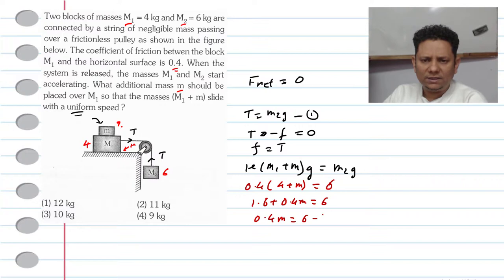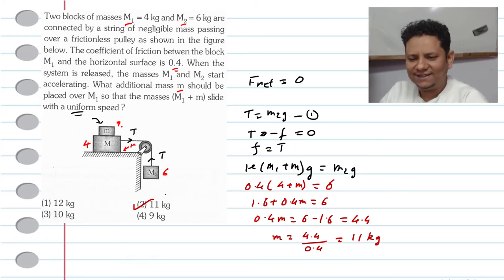This gives 0.4m = 6 - 1.6 = 4.4, so m = 4.4 ÷ 0.4 = 11 kg. Option number 2, 11 kg, should be the right answer.